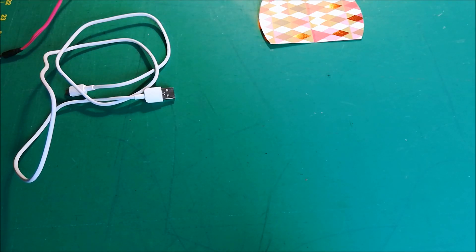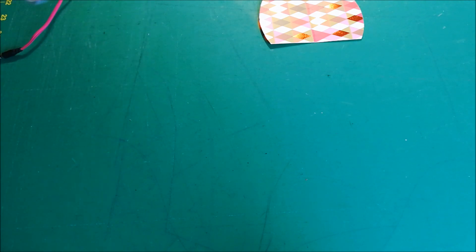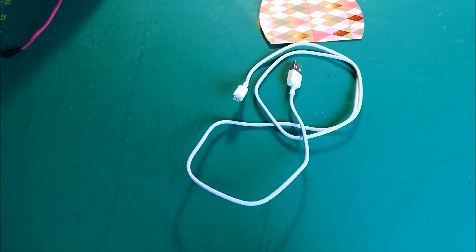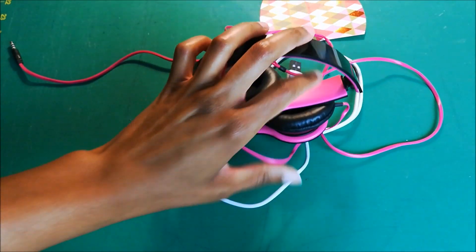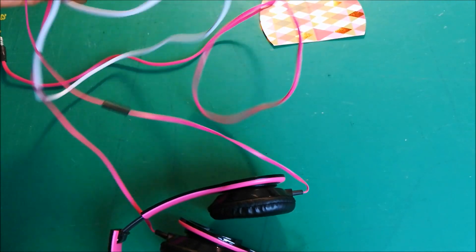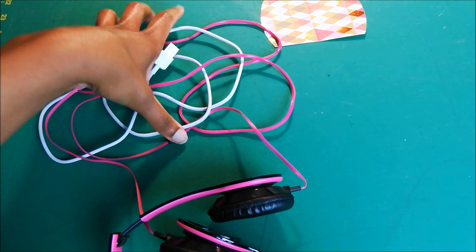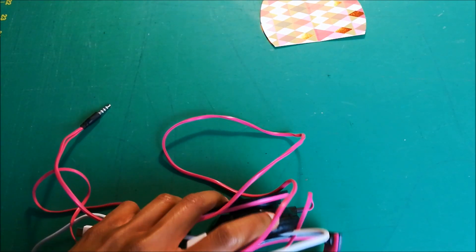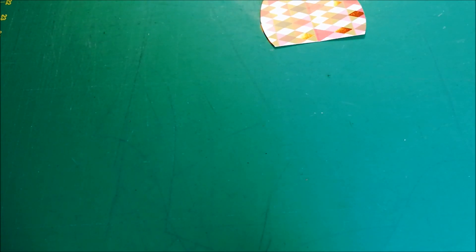All right guys, today I'm working on a new project, a scrap busting project. It's a cord keeper. Basically what it's going to do is help me organize all of these cords that I have, from USBs to headphones to computer cords. It's just gonna make all of them nice and tidy and organized. So I'm following a tutorial that I found online and I'll put that link down in the description if you want to follow along.